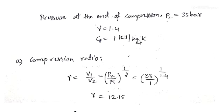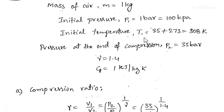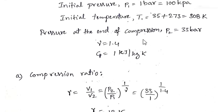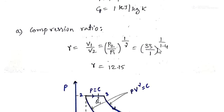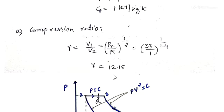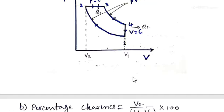P2 is 33 bar and P1 is 1 bar. So we write (33 by 1) to the power of 1 by 1.4, since gamma is 1.4. Simplifying, we get the compression ratio R = 12.15.